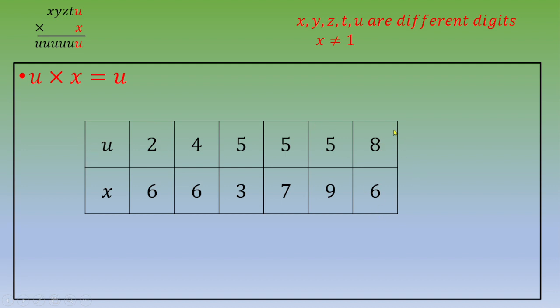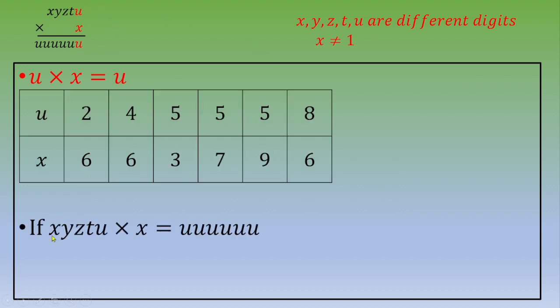So this is not enough to find out the value of u and the value of x. We are going to interpret this. If x, y, z, t, u times x is equal to u, u, u, u, u, u.